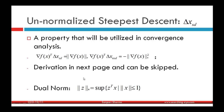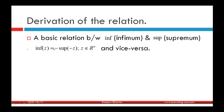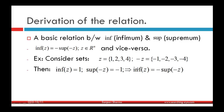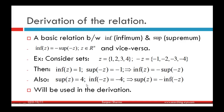The dual norm of a vector z is defined as the supremum of z^T x such that the norm of x is less than or equal to 1. Another relation used in the derivation is that the infimum of z equals negative of the supremum of negative z. For example, if z takes values {1, 2, 3, 4}, the infimum of z is 1 and the supremum of negative z is -1, confirming: inf(z) = -sup(-z).